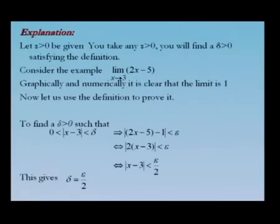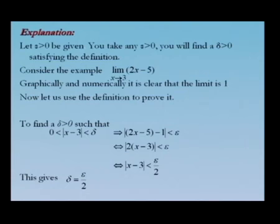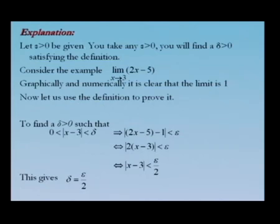Let us take an example. Consider the limit x tends to 3 of (2x − 5). Graphically and numerically it is clear that the limit is 1; if you put x = 3 you get 1. Using the definition, we need to find δ > 0 such that 0 < |x − 3| < δ implies |2x − 5 − 1| < ε. This is true if and only if |2(x − 3)| < ε, if and only if |x − 3| < ε/2. So we can choose δ = ε/2.